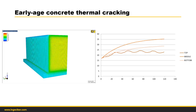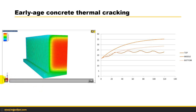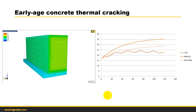Here you can see in this chart the graphs of the different points of the model — top, middle, and bottom — and the evolution of the temperature inside this block. Below you have the hours, and in the Y direction you have the temperature in centigrade.